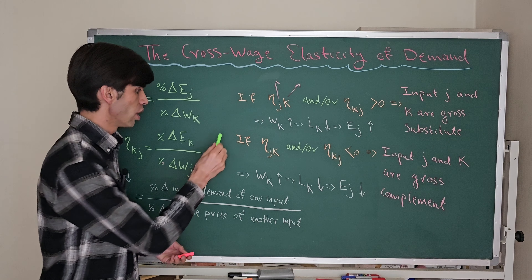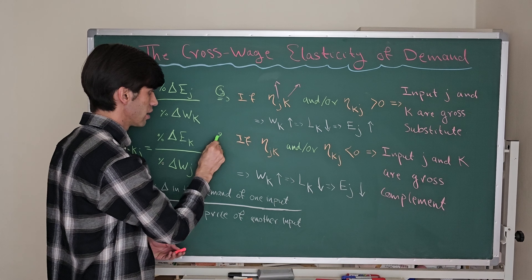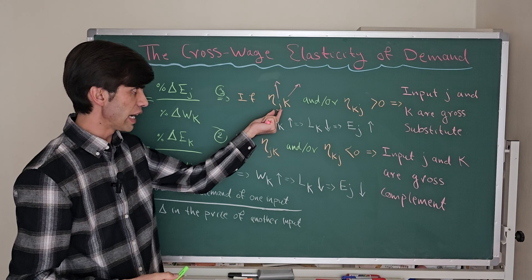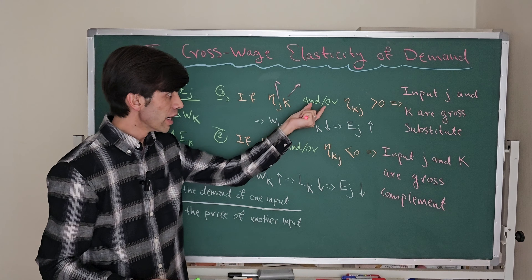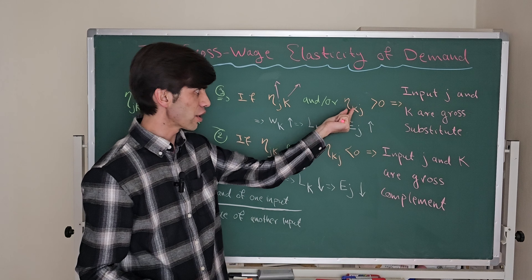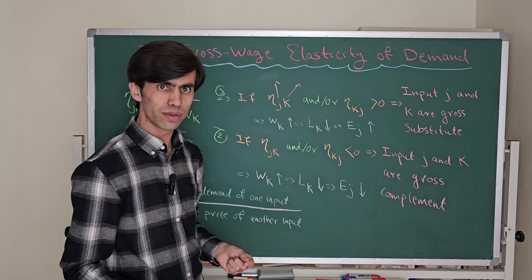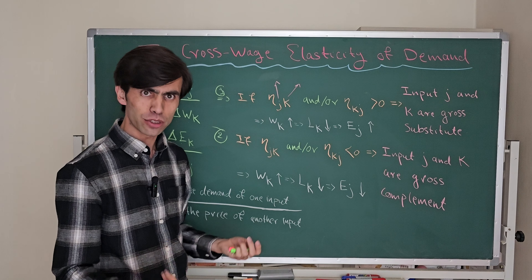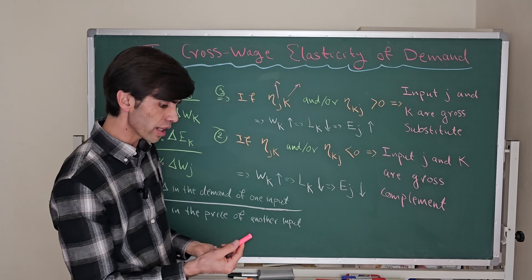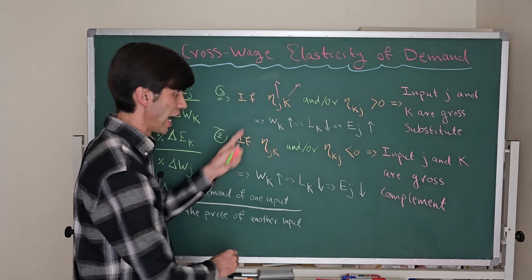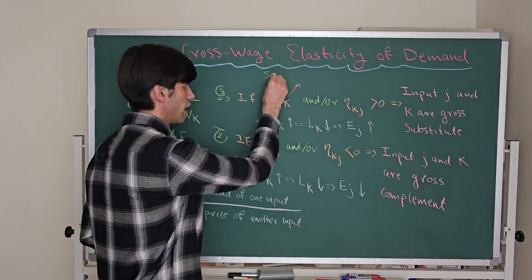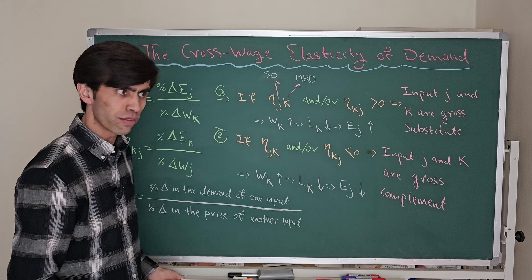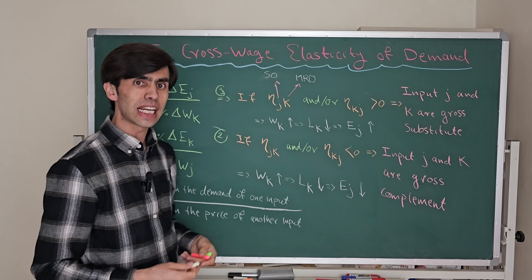Now we need to consider two conditions. First, if the cross-wage elasticity of input J with respect to the wage level of input K — or the cross-wage elasticity of input K with respect to the wage level of input J — is greater than zero, it means input J and input K are gross substitutes. For example, if input J is a sales officer and input K is a marketing research officer, they can be substituted.